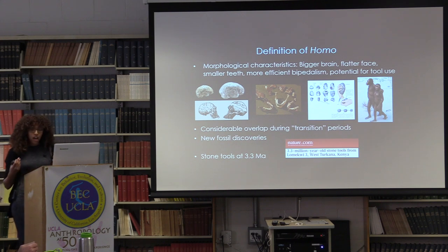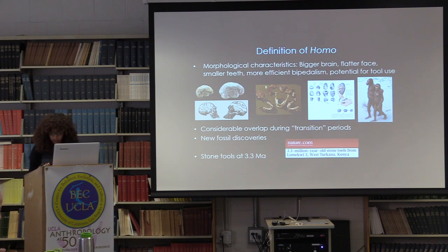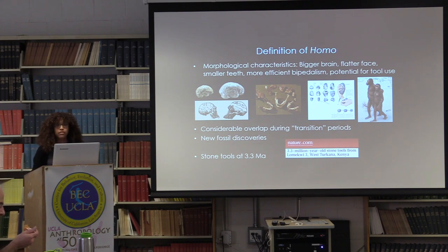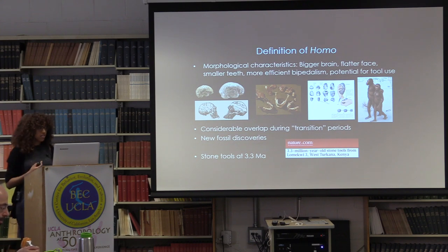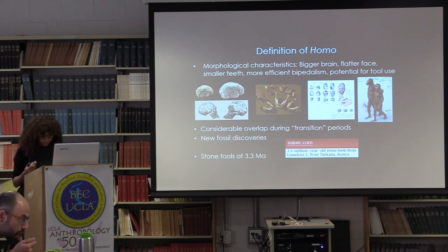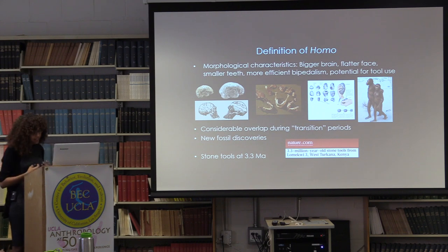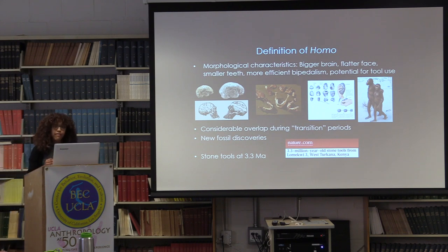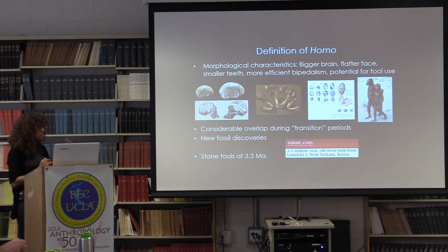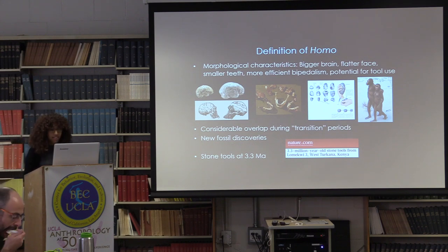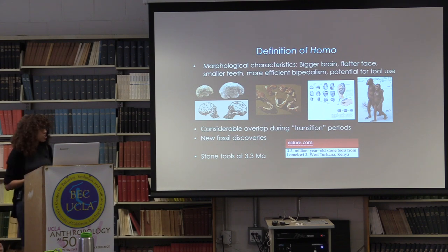However, this checklist of traits does not remove the difficulty researchers face when classifying Homo specimens. The morphological overlap during the transition period characterizing early Homo is substantial, making it difficult to distinguish late Australopith from an early Homo individual in the fossil record, as well as early Homo from Homo erectus.